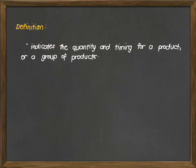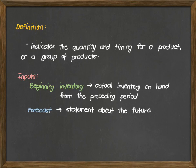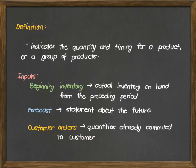By definition, it indicates the quantity and timing for a product or a group of products. Inputs are your beginning inventory, which is the actual inventory on hand from the preceding period. Second is the forecast, which is a statement about the future. And last is your customer orders, or the quantities already committed to customers.